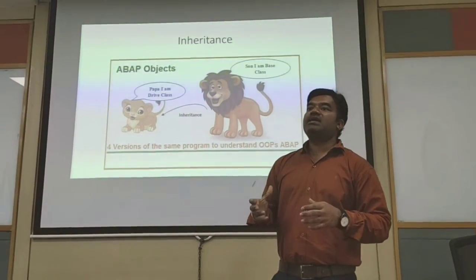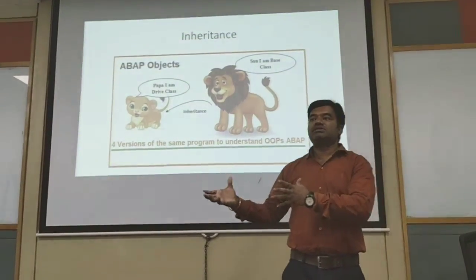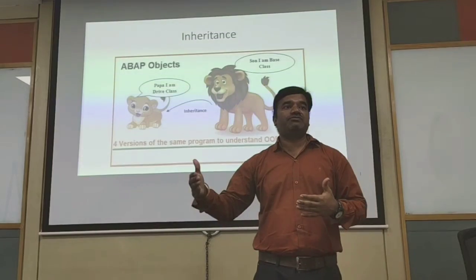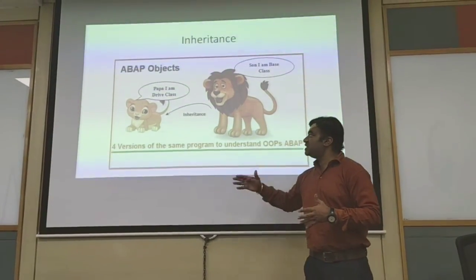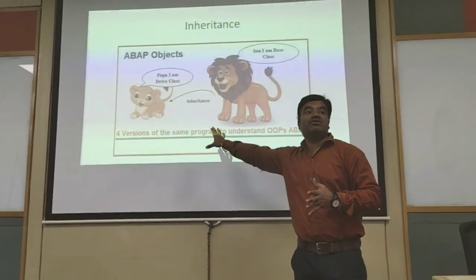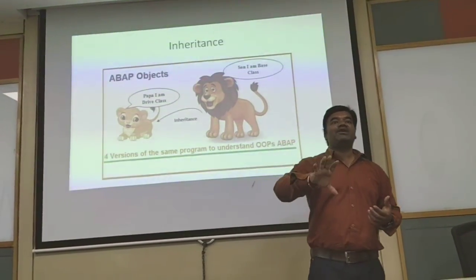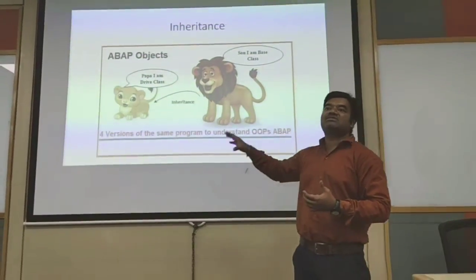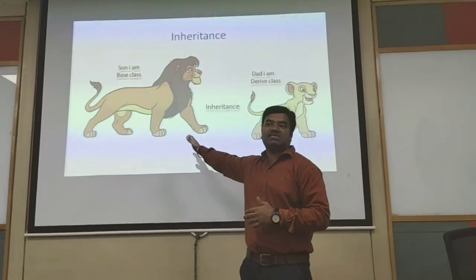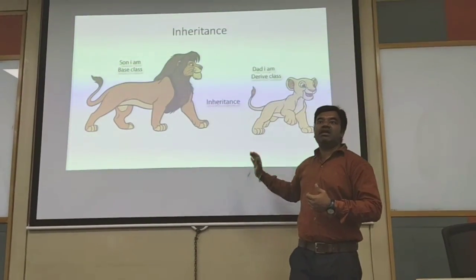Inheritance is copying the declarations or properties of a superclass into a subclass. There are different levels of inheritance such as public section, private section, and protected section, which we will discuss in coming sessions. When you derive a class from a superclass, most of the properties of the superclass can be inherited into the subclass. The derived class is called the subclass. So you have a base class — the superclass — and from it, you copy properties into the subclass. This process is called inheritance.